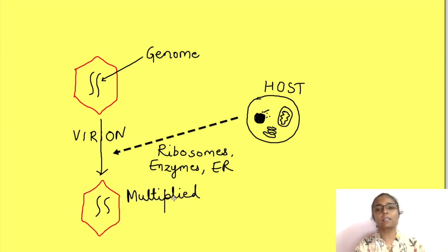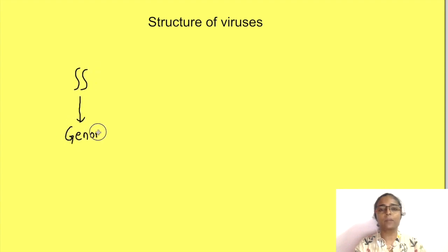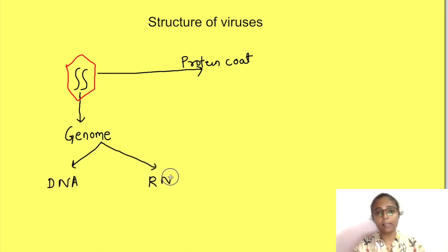First we will discuss the structure of viruses in general and then we will see the aspects particular to coronavirus. All viruses have a genome which is surrounded by a protein coat known as capsid. The genome may be either DNA or RNA but never it is both. This is in contrast to all other organisms which have both DNA as well as RNA.